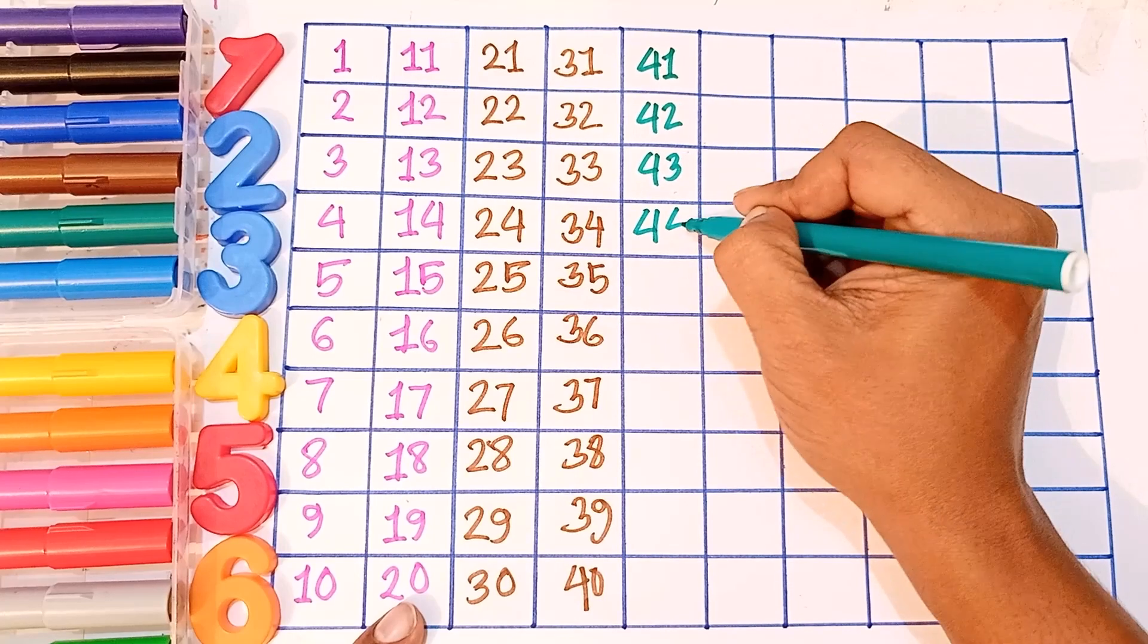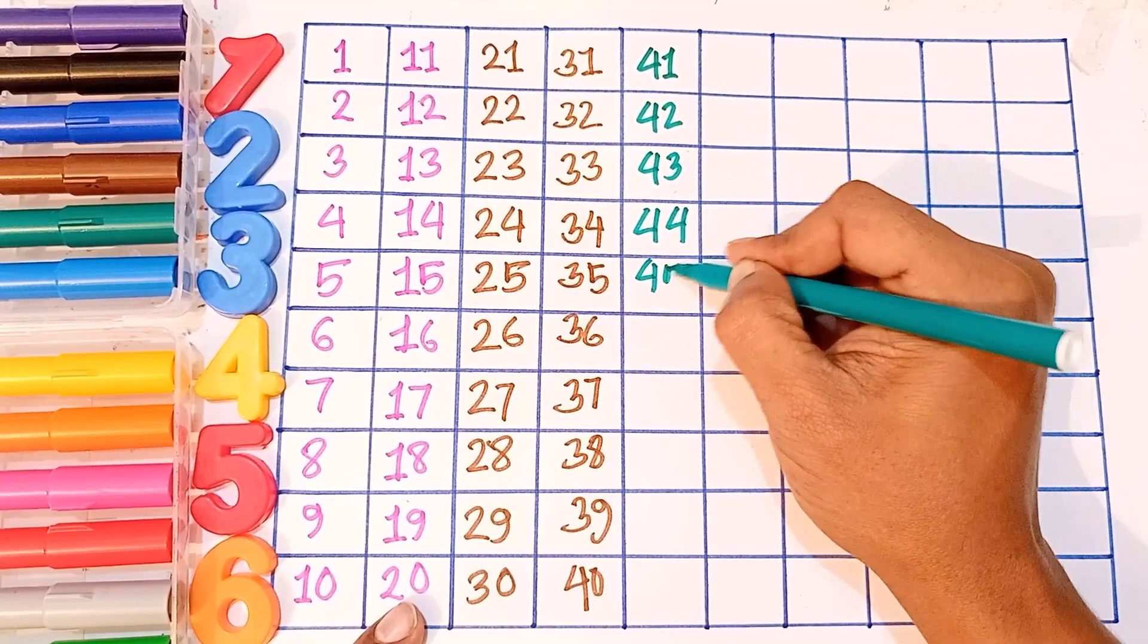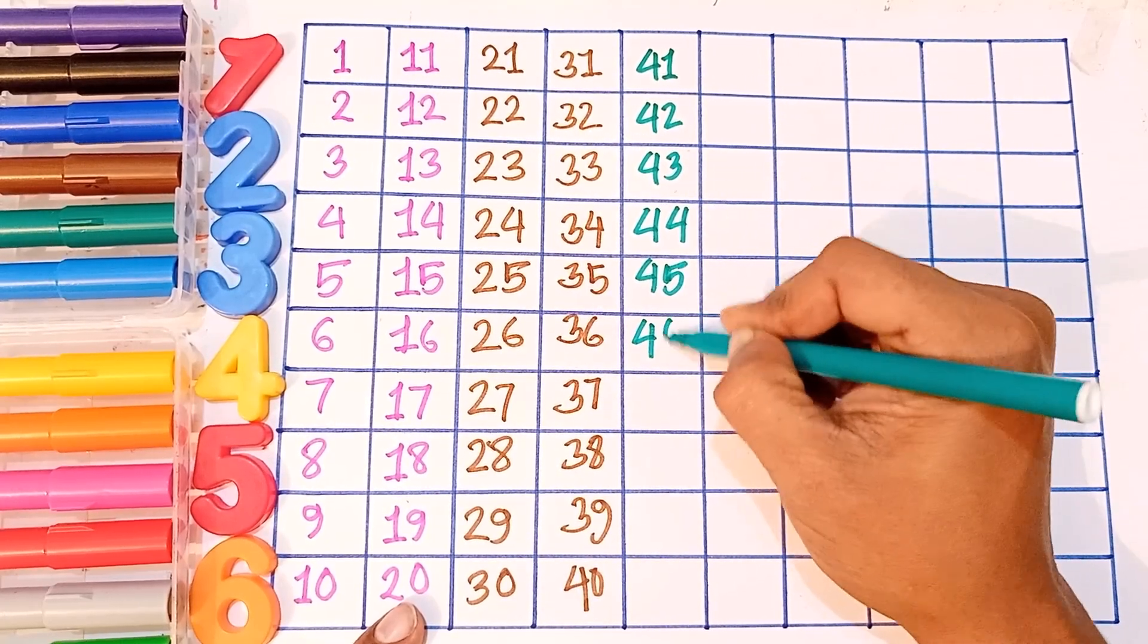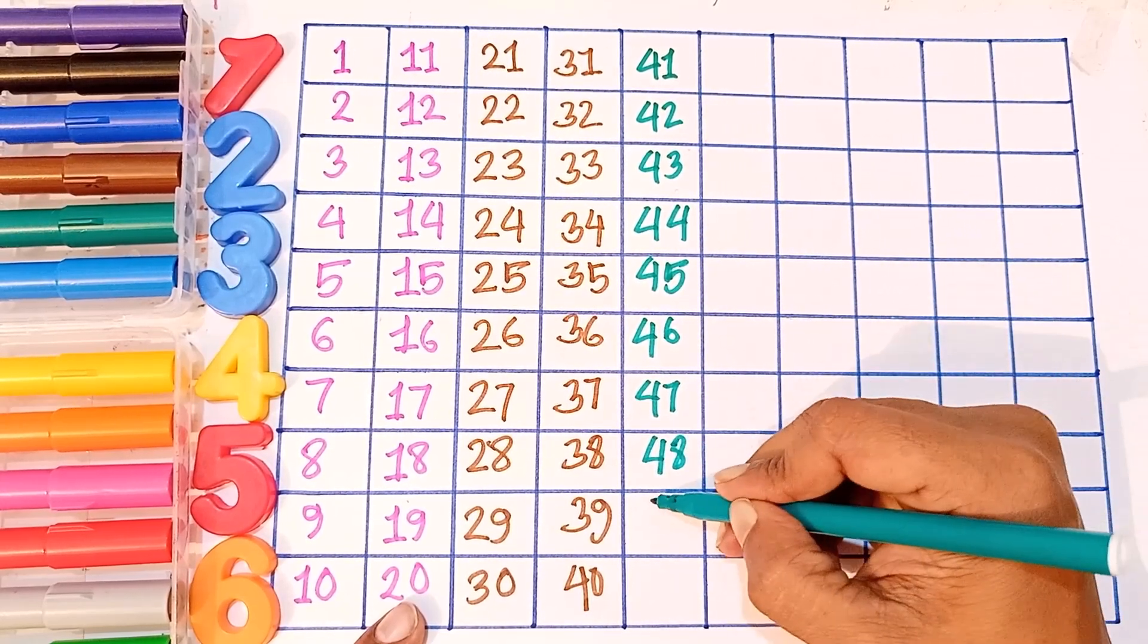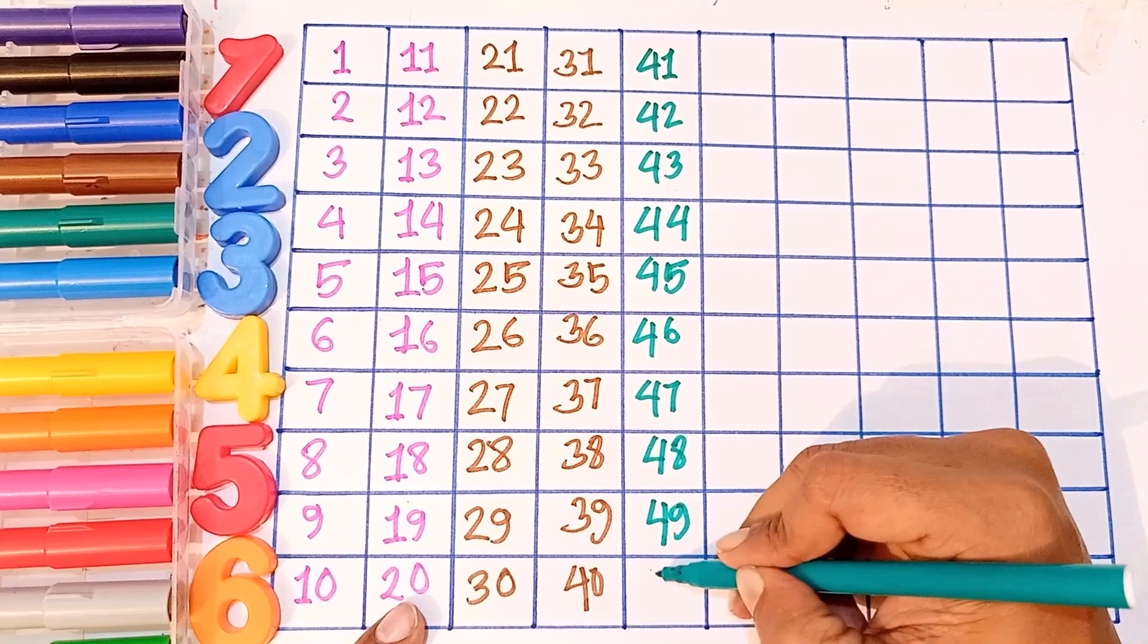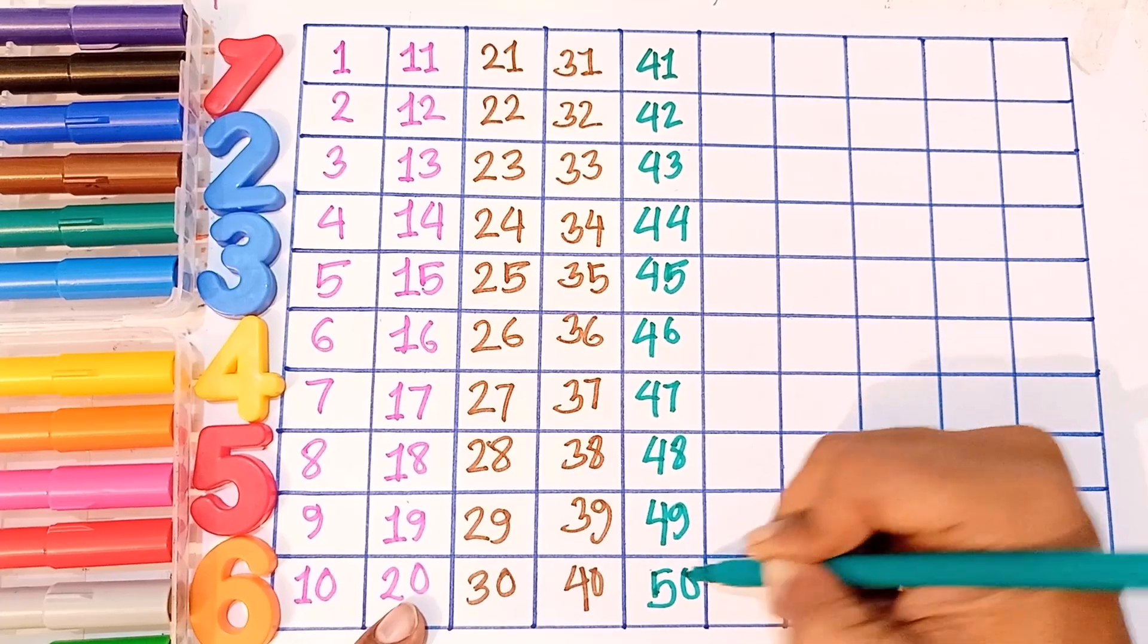Forty-three, forty-four, forty-five, forty-six, forty-seven, forty-eight, forty-nine, fifty. Five and zero, fifty.